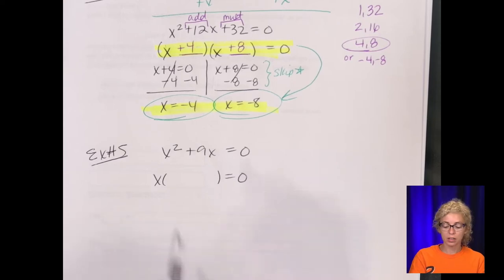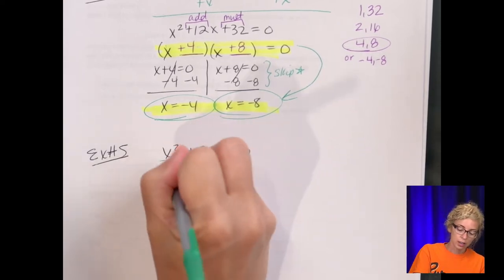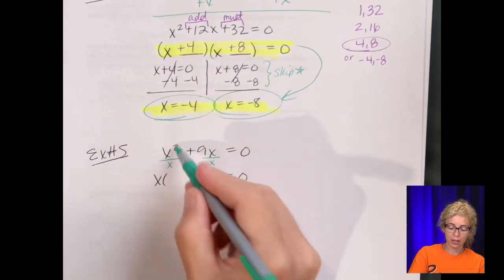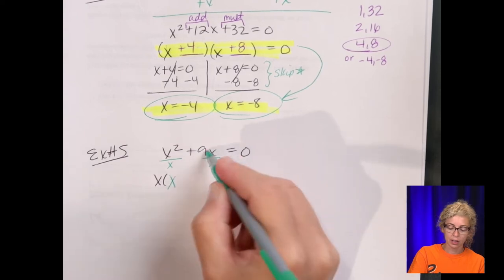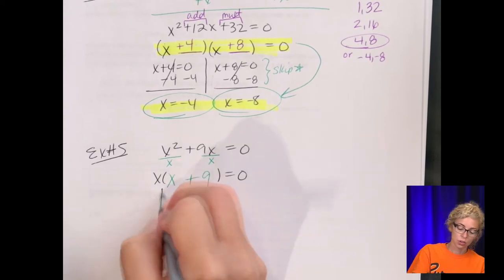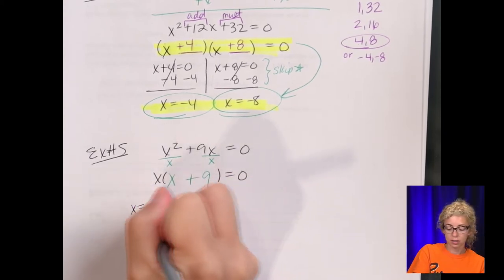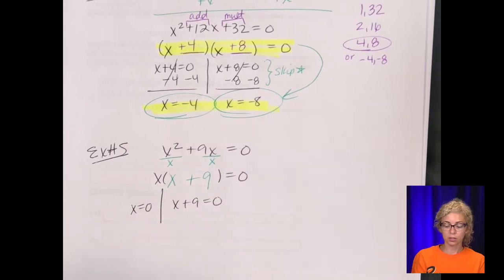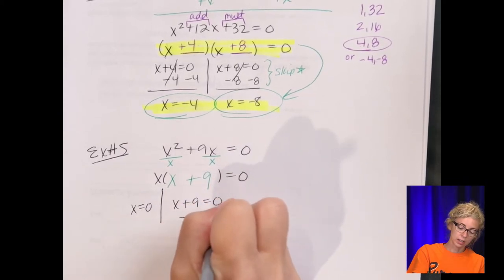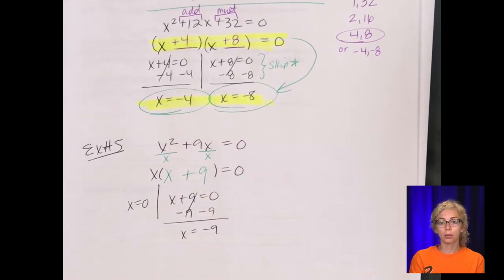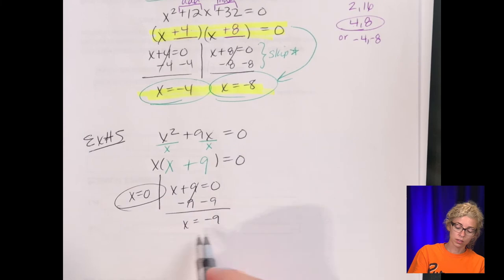Dividing each term by x: x squared divided by x is x, and 9x divided by x is 9. So we get x times the quantity x plus 9 equals zero. Setting x plus 9 equal to zero and subtracting 9, our roots are 0 and negative 9.